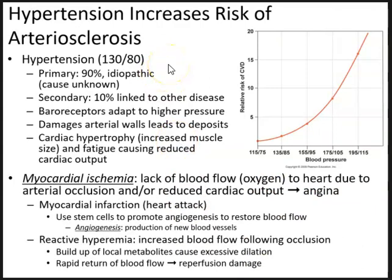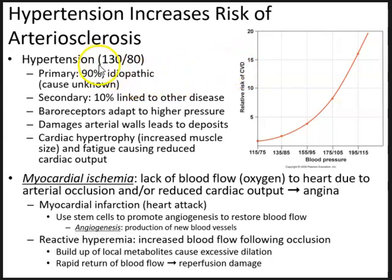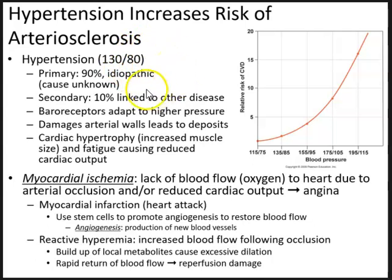Hypertension: prolonged increases in blood pressure increase the relative risk of cardiovascular disease. Hypertension is defined as a blood pressure greater than 130 mmHg systolic and greater than 80 mmHg diastolic. We have primary and secondary hypertension. Primary hypertension accounts for about 90% and is idiopathic — we don't know the underlying cause.